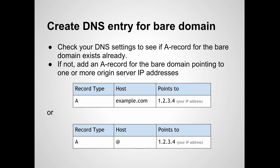As mentioned earlier, many domain name registrars add entries for bare domains by default. Any existing A record entries for your bare domain should look as shown in the first table. The rightmost column represents one or more IP addresses for your origin server. Some registrars also use the at symbol to represent the bare domain, such as shown in the second table. If such an A record entry does not exist already for the bare domain, create one as shown in the tables.